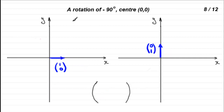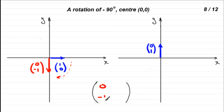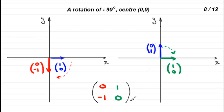For number 8, a rotation of minus 90 degrees, centre 0, 0. Minus 90 degrees means turning clockwise. So (1, 0) turns clockwise to end up at (0, −1). And (0, 1) rotated 90 degrees clockwise goes into the position (1, 0). The matrix has columns (0, −1) and (1, 0).